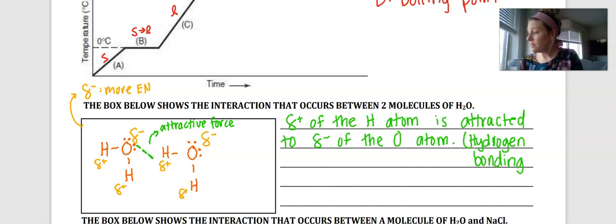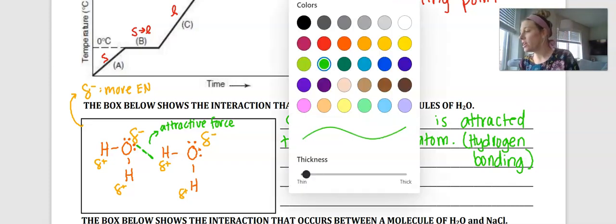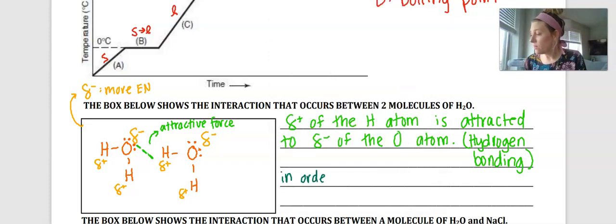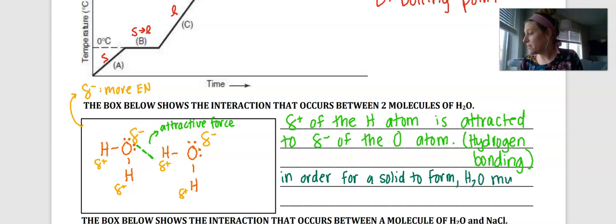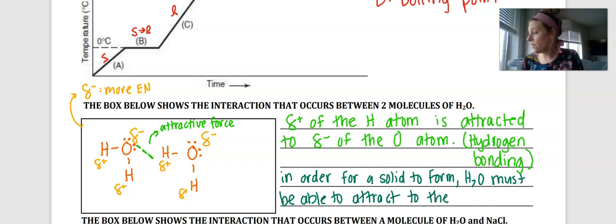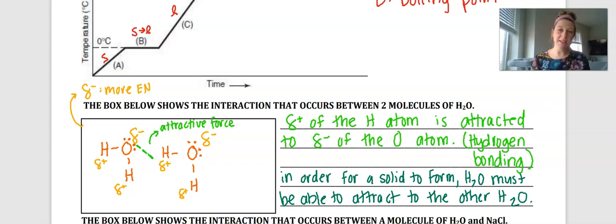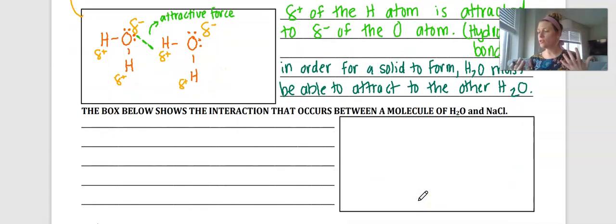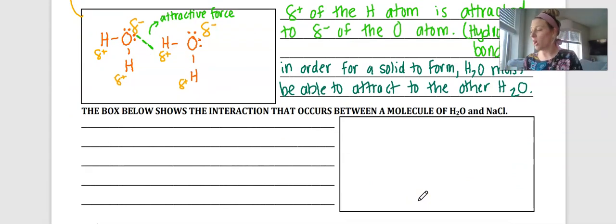In order for water to form a solid — in order for ice to form — we need the water molecules to be able to attract to one another and form these intermolecular forces of attraction. So in order for a solid to form, H₂O must be able to attract to the other H₂O. But what happens when we add salt to that water, or to that ice? Let's go ahead and draw the interaction that occurs between water and NaCl.